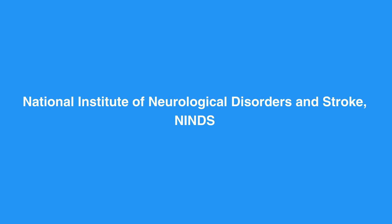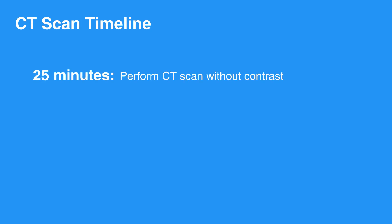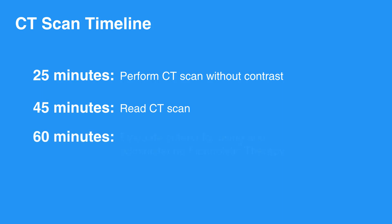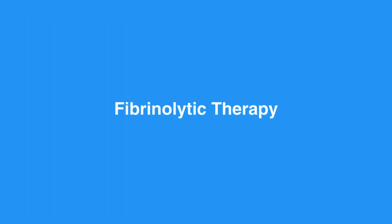If time of symptom onset is known, the National Institute of Neurological Disorders and Stroke, or NINDS, has established time goals. The NINDS advises general assessment by an expert and urgent CT scan without contrast within 10 minutes of arrival. Within 25 minutes, perform a CT scan without contrast and neurological assessment; read the CT scan within 45 minutes. Within 60 minutes, evaluate criteria for fibrinolytic therapy or clot-buster. Fibrinolytic therapy may be used within 3 hours of symptom onset, or 4.5 hours in some cases. Within 180 minutes of arrival, the individual should be admitted to the stroke unit.